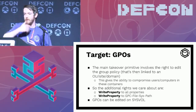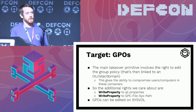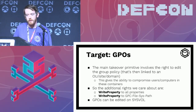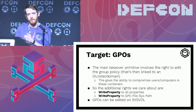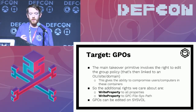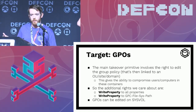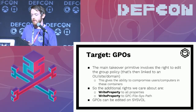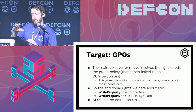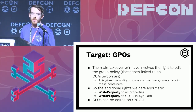For group policy objects — one relationship not yet incorporated into the BloodHound schema — the main takeover primitive is: can you modify the GPO? GPOs are linked to OUs, sites, and domains with users, groups, and computers contained within them. If you can modify the GPO there are countless ways to get code execution on a computer it's applied to. The rights we care about are Write Property to all properties, or specifically to the GPC-File-Sys-Path attribute. If you modify permissions here, those permissions clone down to SYSVOL on the file system.